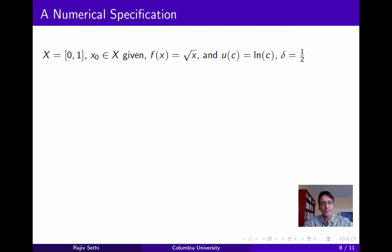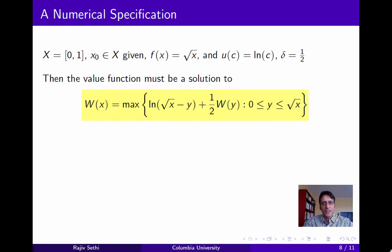Let's take a particular numerical specification of this example. Suppose that the metric space consists of the closed unit interval. Some initial level of capital x0 is given. The output you get from capital x is simply the square root of x. The one-period return is the log function and the discount factor is one-half. Now the value function must be a solution to the equation shown on the slide.